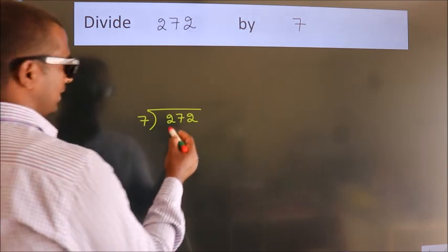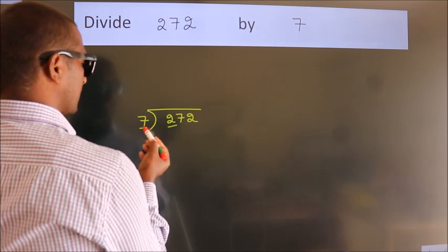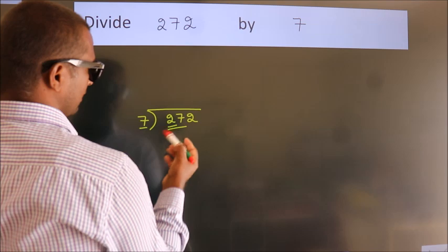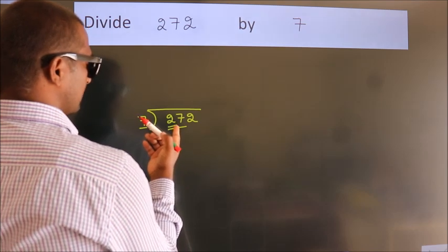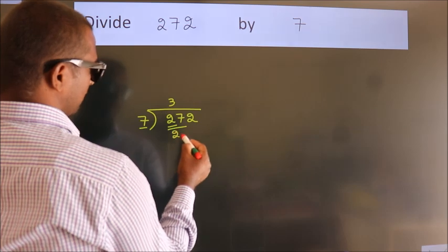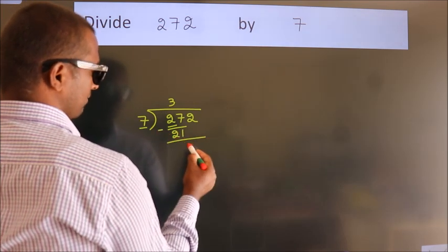Next. Here we have 2, here 7. 2 smaller than 7. So we should take 2 numbers, 27. A number close to 27 in 7 table is 7 threes, 21. Now we should subtract. We get 6.